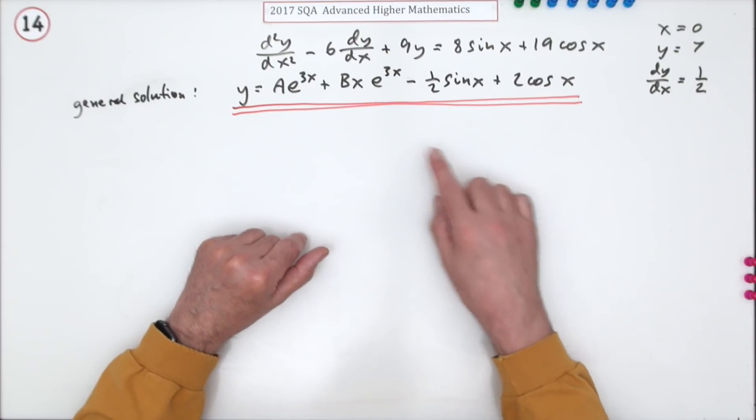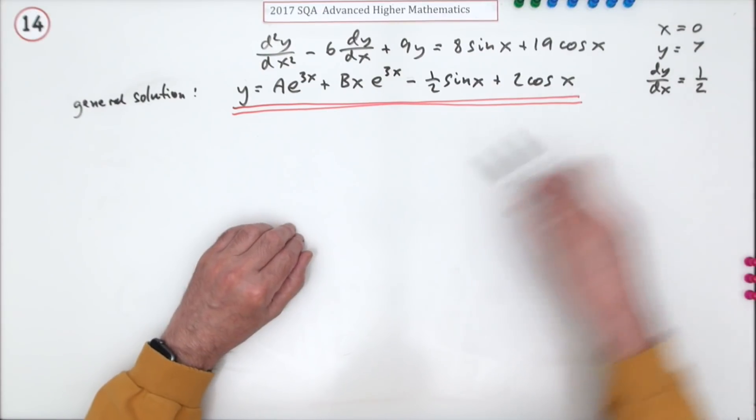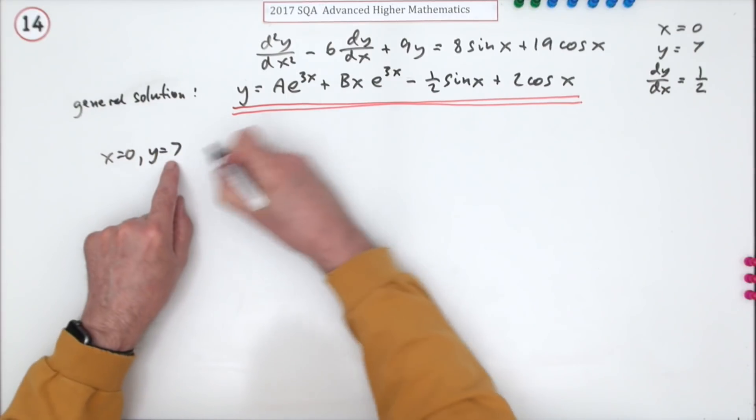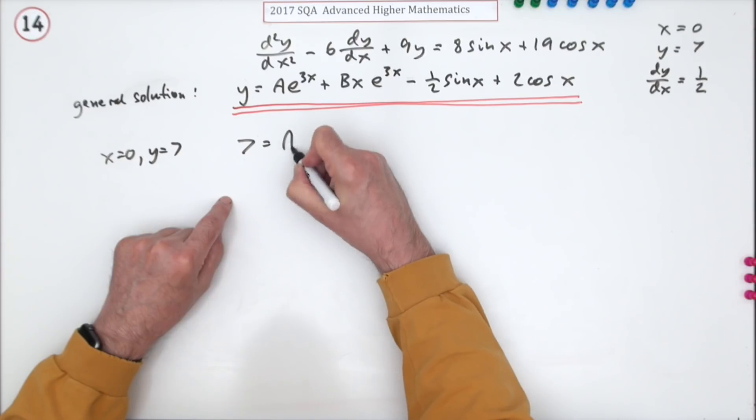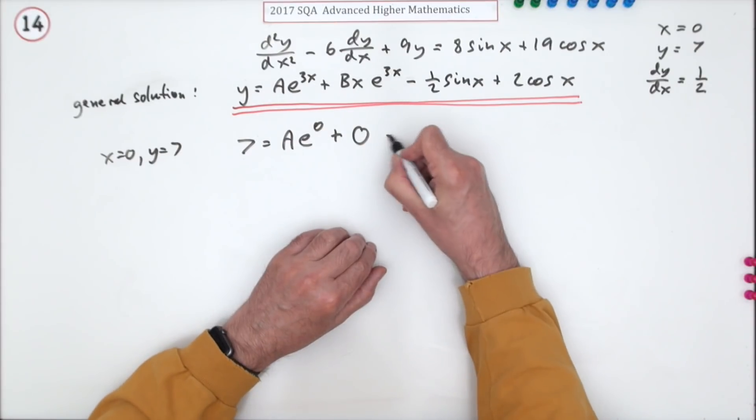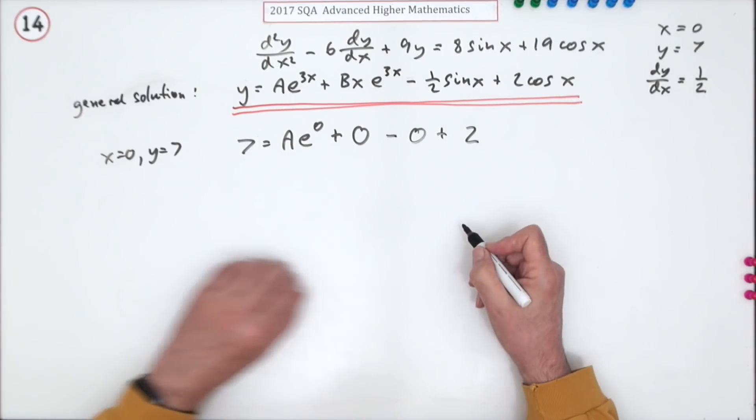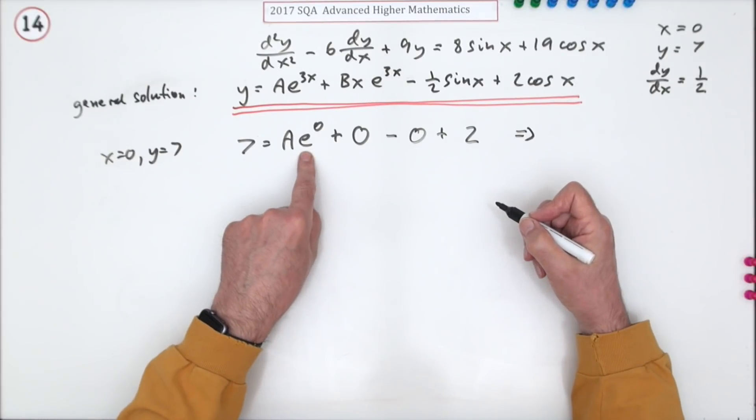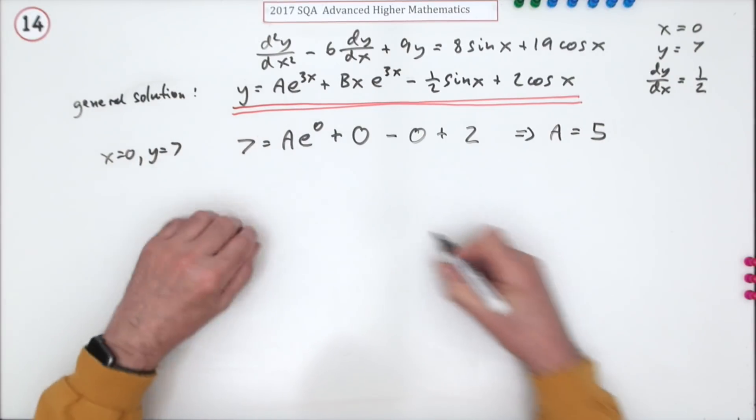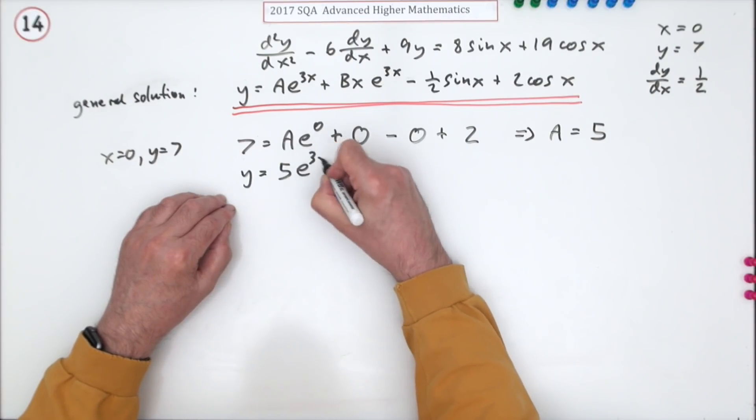Again there's no mark actually for stating the general solution either. The final three marks now just for working out A and B to get the particular solution. Start using the initial conditions: when x is 0, y is 7. So y is 7 when x is 0, so that'll be Ae^0 plus that whole term comes to 0 because you're multiplying by 0, minus sine of 0 is 0, cos of 0 is 1 so it's plus 2. So that just rearranges, since that's 1, to A equals 5. I think I'll pop that in now I know what A is, so it now becomes y equals 5e^(3x) plus Bxe^(3x) minus a half sin x plus 2 cos x.